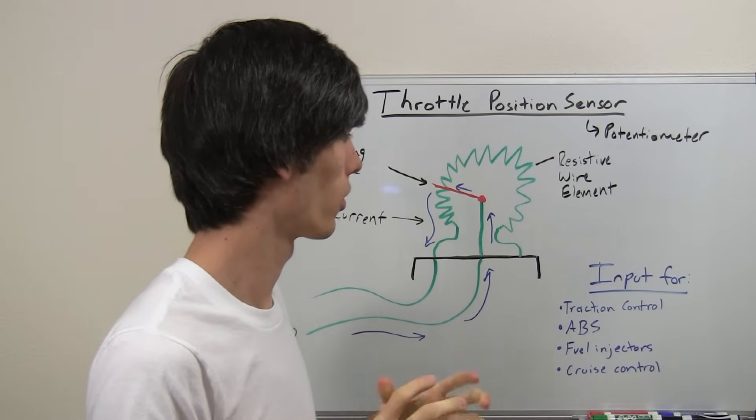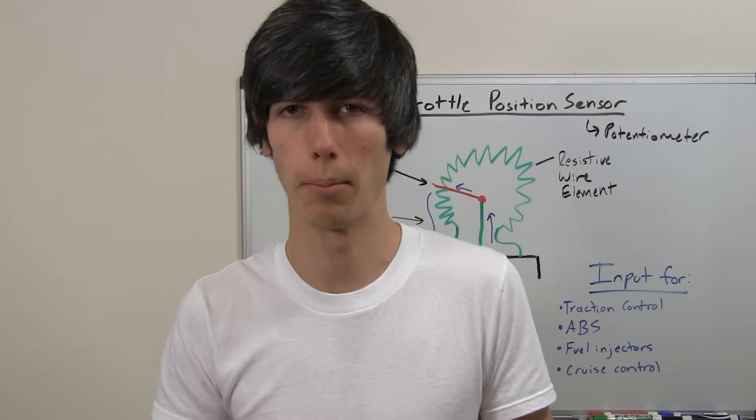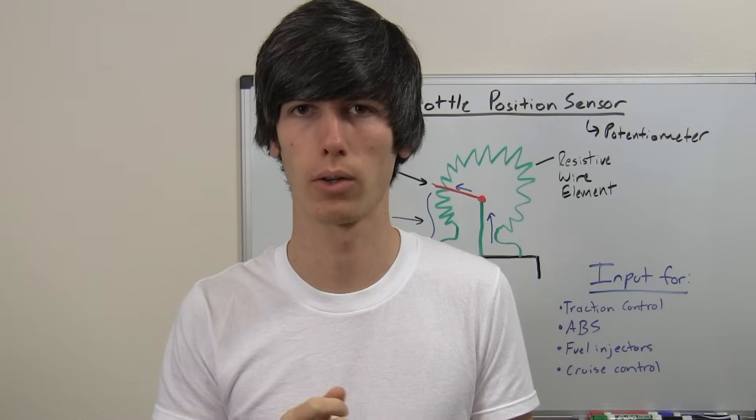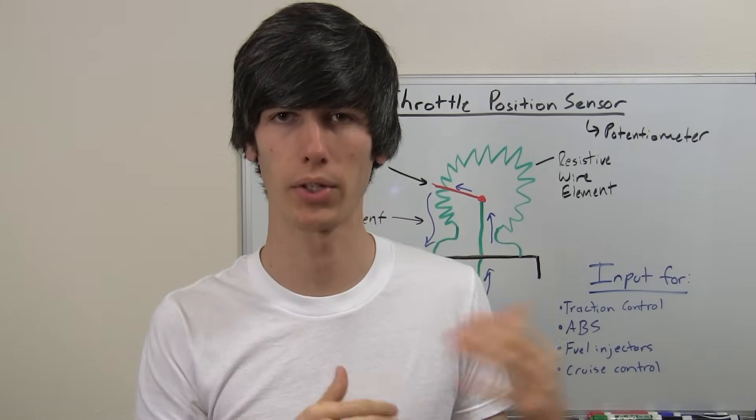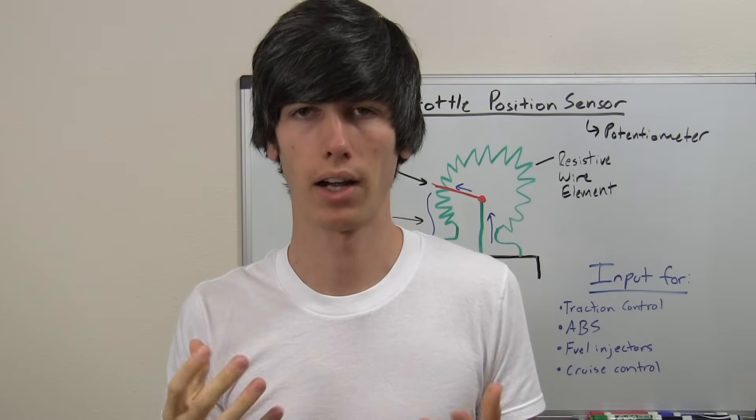Now, throttle position sensors. So this is used to obviously measure where the position of the throttle butterfly valve, how it is oriented so that the engine knows how much air is flowing in.